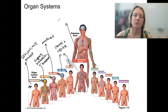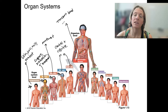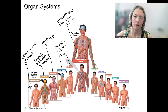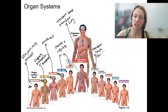Cardiovascular is going to be responsible for transporting blood and all of the components in blood — many important components — throughout the body. Lymphatic is also a transport system. It's going to be involved in transporting lymph fluid, and that's going to be involved in the immune system and fighting infection.